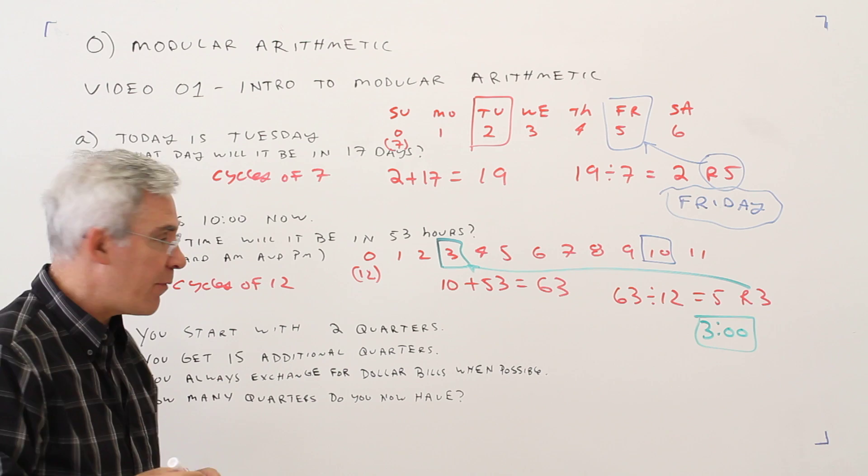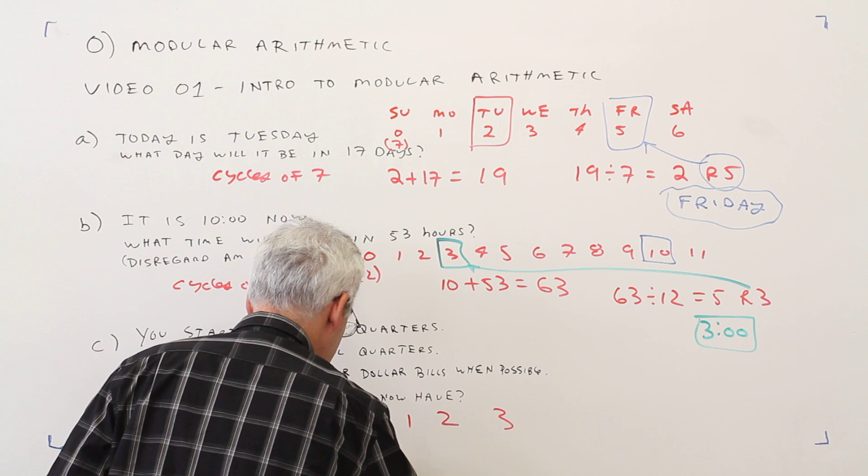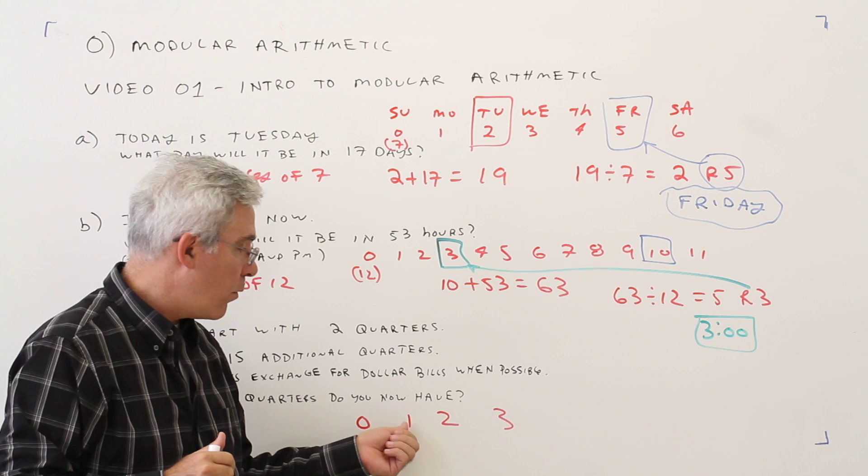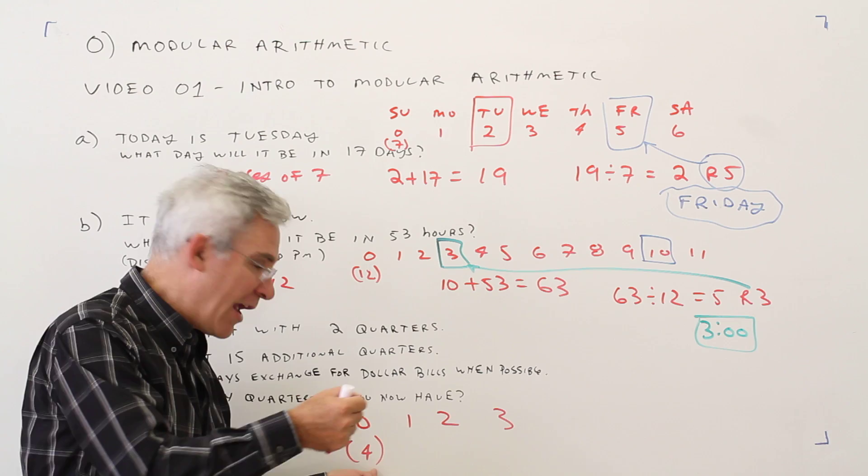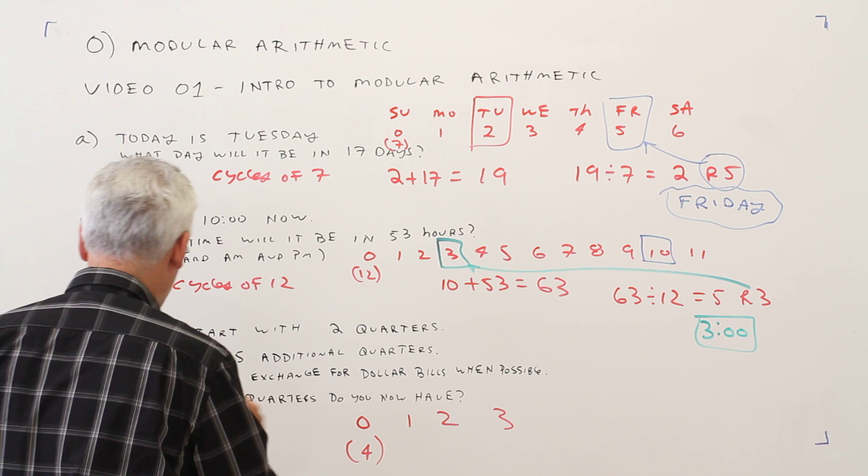Okay, so again, let's make a list. 0, 1, 2, 3. So basically, you can have no quarters, 1 quarter, 2 quarters, or 3 quarters. If you had 4 quarters, you'd exchange it for a bill and you'd end up with 0. So that's really what our cycle is. Again, it's a cycle of 4.